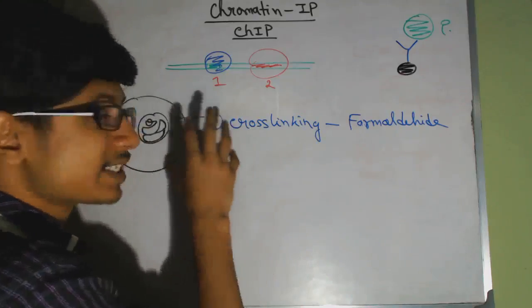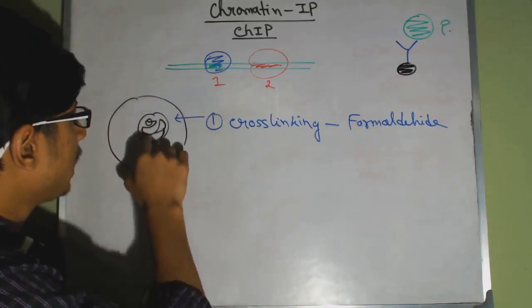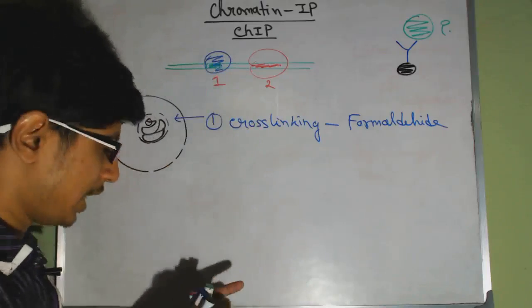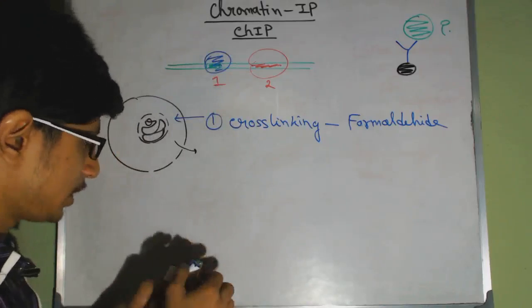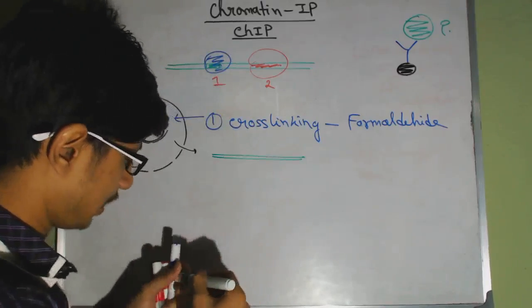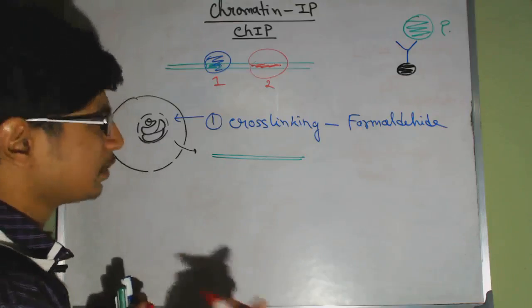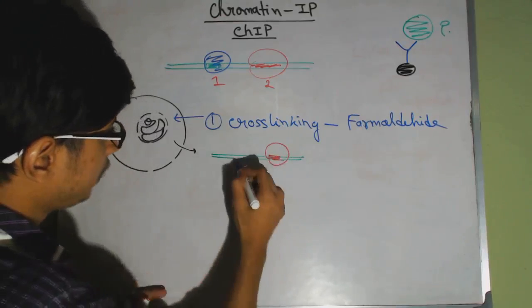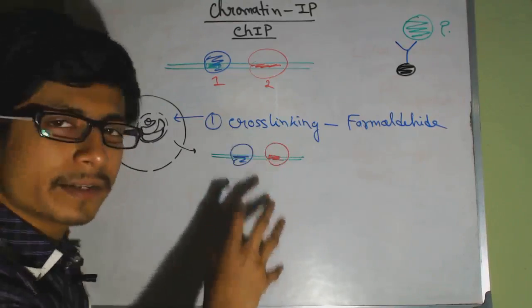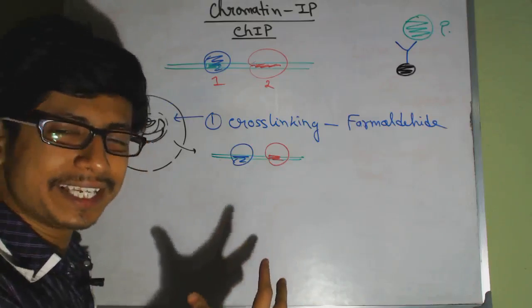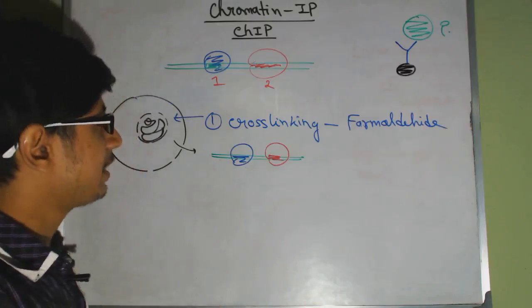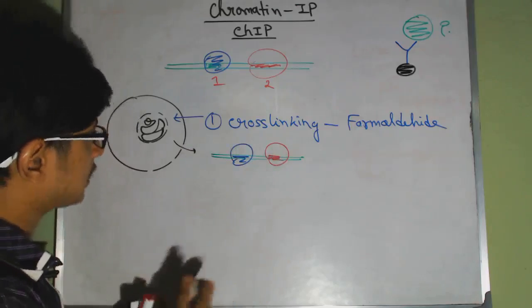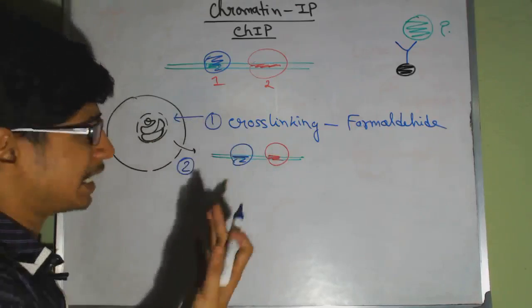Once the cross-linking is done, the second step is to break the cell open and open the nuclear envelope using sonication. We take all the chromatin-bound proteins and sequences out. Now we have the protein regions bound to the chromatin — DNA with proteins is called chromatin — so we have the chromatin with our proteins of interest.